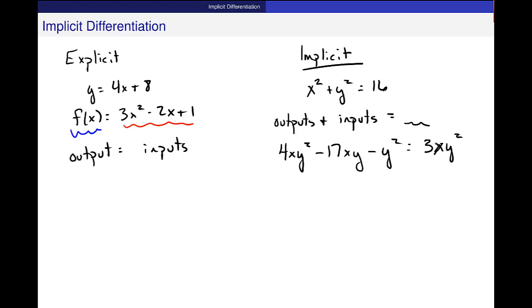There is still an equal sign in these and sometimes more outputs and inputs on the other side. Something completely reasonable to have in this definition is something like this. This is y, Y is still the output here, and x is still the input variable. But now they're mixed up in this way that it's hard to see exactly what y equals in terms of x.